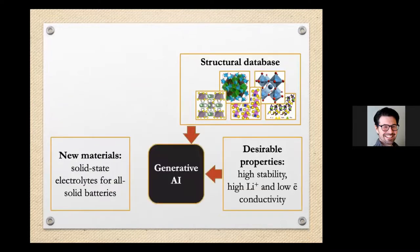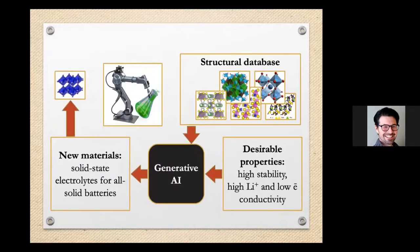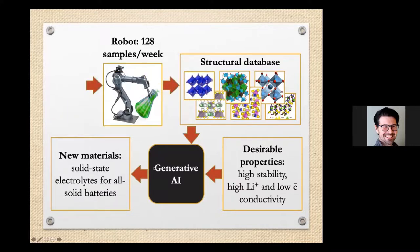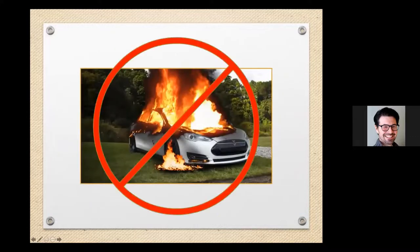Some artificial intelligence methods can certainly generate structures of small molecules today. Our current project is to use generative AI to create new, safer, non-flammable materials for lithium-ion batteries. Once we go through all steps shown here, you won't see a Tesla car burning like this anymore. Thank you.